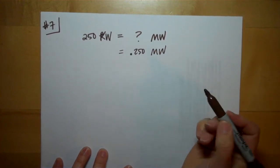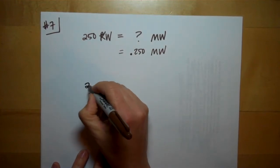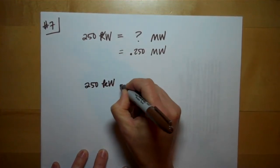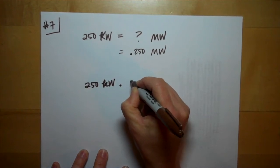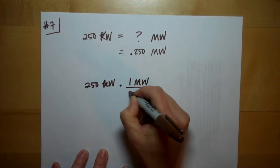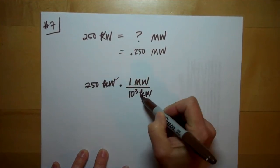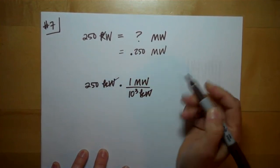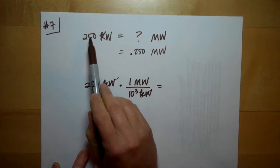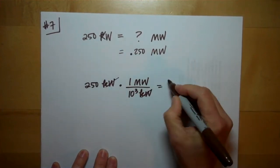If you prefer to follow your units, you can do it like this. You can say 250 kilowatts. You know that in one megawatt there's ten to the third kilowatts. Kilowatts cancel, so you're literally dividing by a thousand. That's what that did. Divided by a thousand to get to this number.